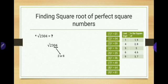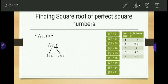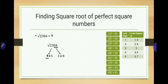Next step is observing the second group, which is 23. Observe that 23 is lying between the square of 4 and the square of 5 — that is, between 16 and 25. Therefore 23 lies between 4 and 5. From 4 and 5 we select 4, the minimum value, as the tens place of our answer. So 4 is selected as the tens place, but we still need to determine the unit place.